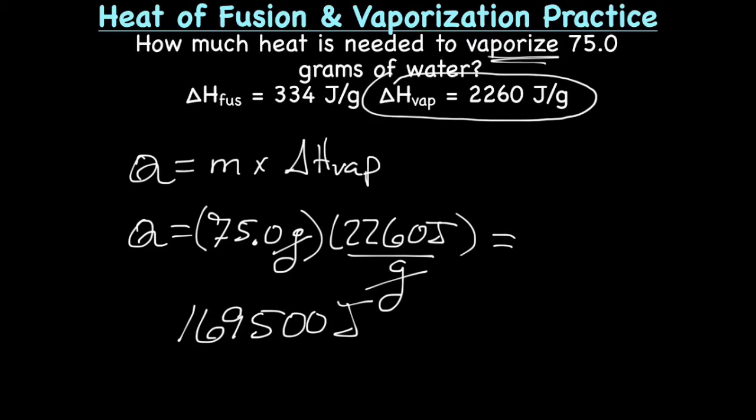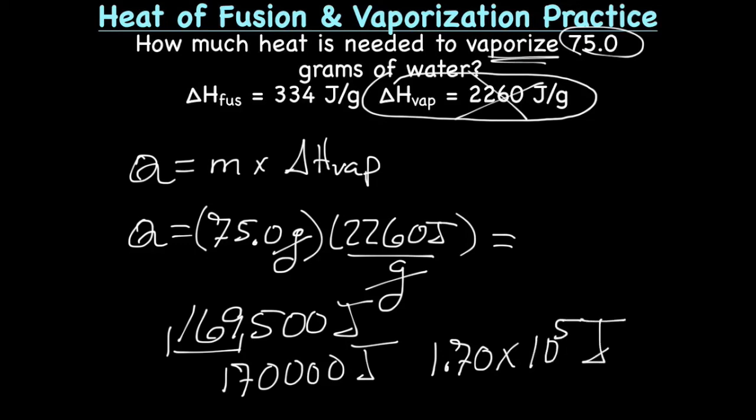Because this is a constant, we won't use that for sig figs. We'll just use our given. That's going to be 3 sig figs. When we round up, we're going to end up with 170,000 joules, which unfortunately only gives us 2 sig figs, so let's change this to scientific notation. And that's how we solve for heat of vaporization.